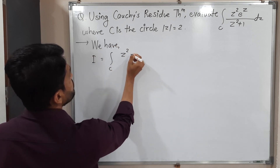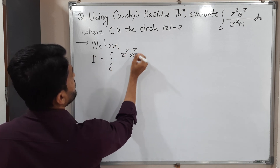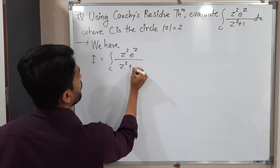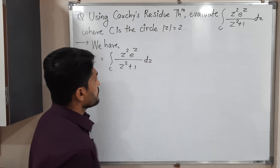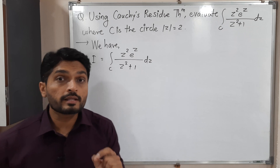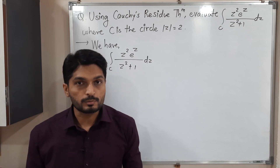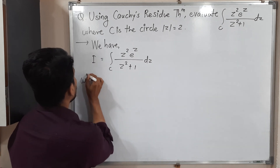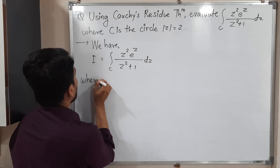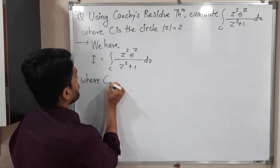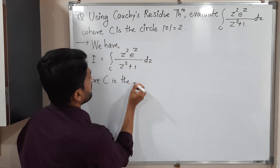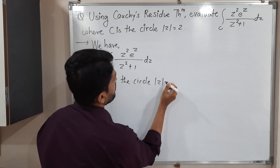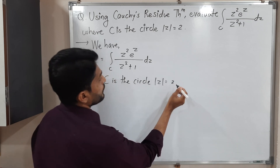The integral is I = ∮ z²eᶻ / (z²+1) dz. The most important thing here is the curve C. C is the circle |z| = 2.